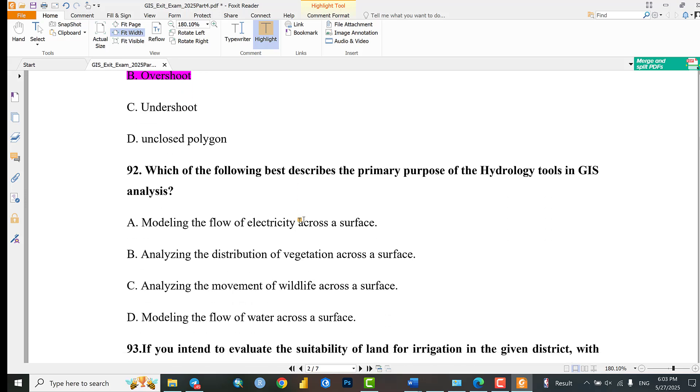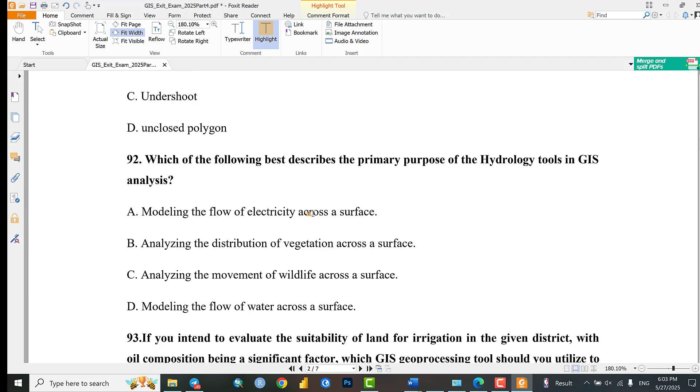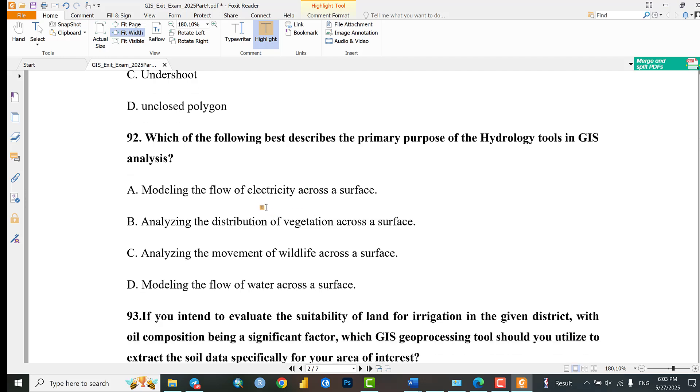Question 92: Which of the following describes the primary purpose of hydrologic loss in GIS analysis? Options include modeling the flow of electricity, analyzing the distribution of vegetation, analyzing the movement of water, or modeling flow across the surface.